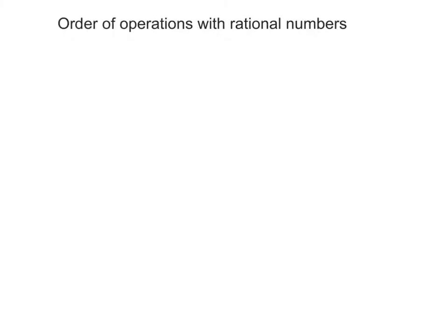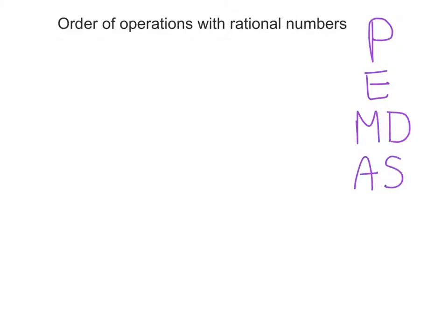So first, let's remember order of operations: PEMDAS stands for parentheses, exponents, multiplication, division, addition, and subtraction. We keep multiplication and division and addition and subtraction on the same level because they are treated equally, and we solve them left to right, which is why I like to put those arrows down there.